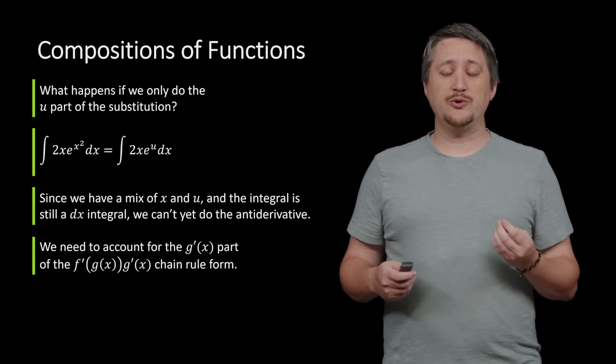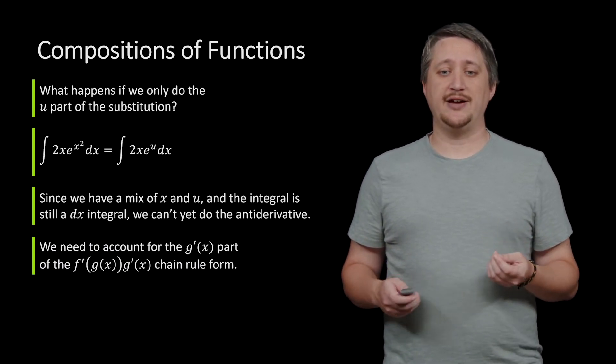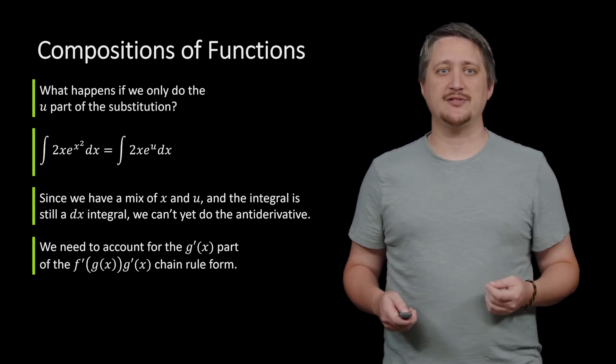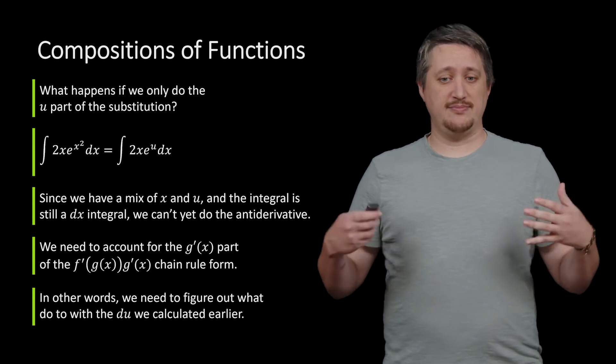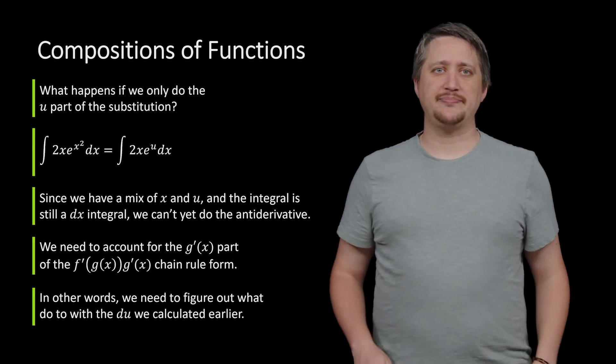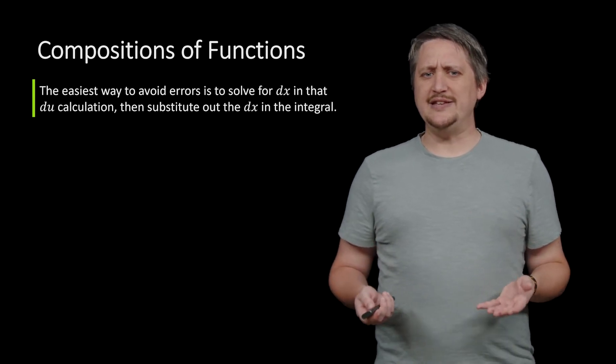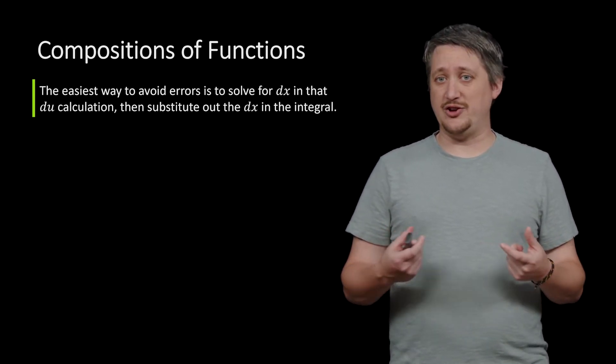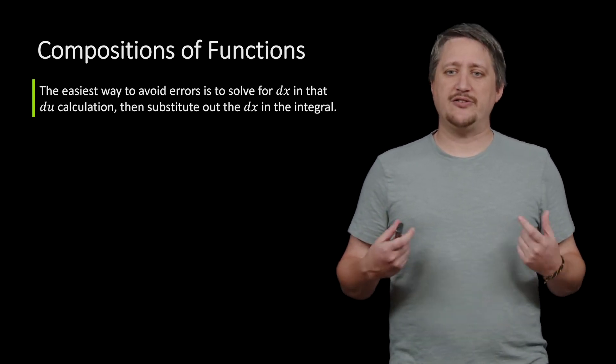In particular, we need to account for that g prime part of that chain rule form, that f prime g of x times g prime of x. And in other words, we need to figure out what to do with that du that we calculated earlier.